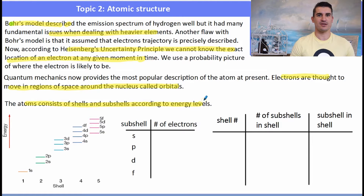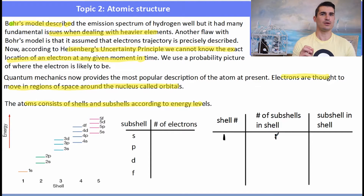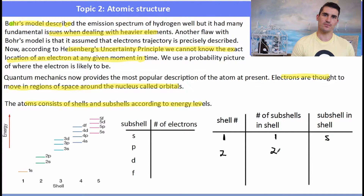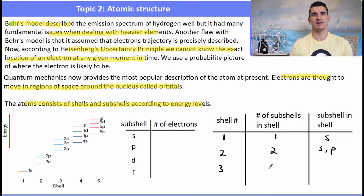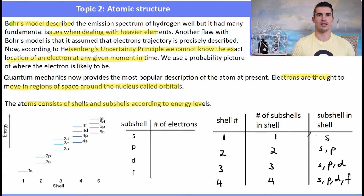The atom consists of shells, and within the shells there are regions of different energy called subshells. Shell one has only one subshell — the s subshell — which can hold two electrons. The second shell has two subshells: s and p. The third shell has three: s, p, and d. The fourth shell has four: s, p, d, and f. An s subshell holds two electrons, p holds six, d holds ten, and f holds fourteen.